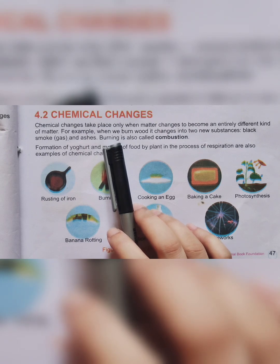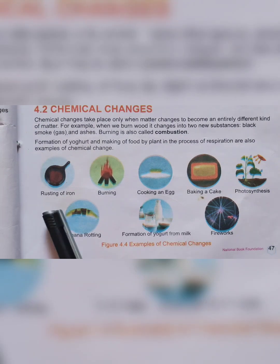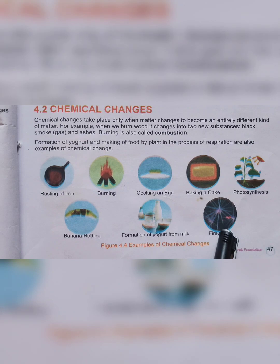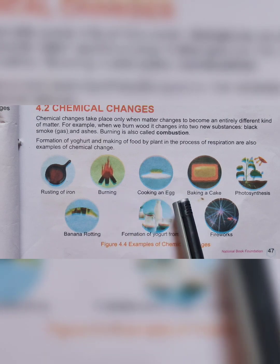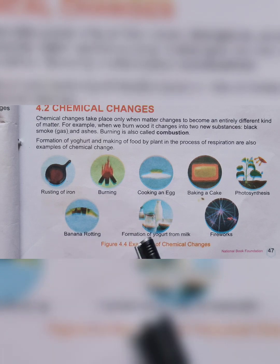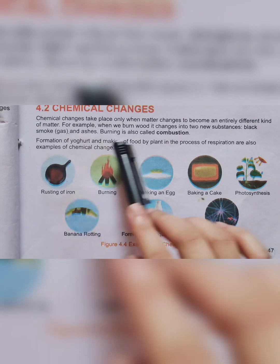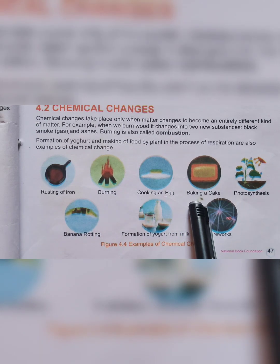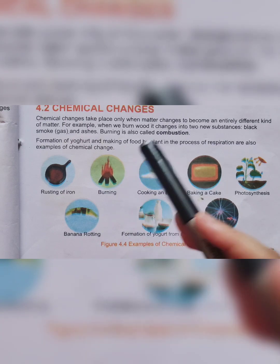Here we have some other examples of chemical change: rusting of iron, burning, baking a cake, photosynthesis, and formation of yogurt from milk. If we look at all these examples, we can examine them in daily life — for instance, cooking an egg. When you cook an egg, it becomes a different substance. That is a chemical change.